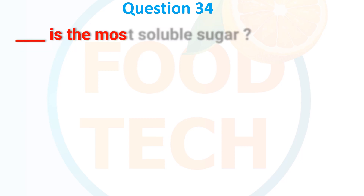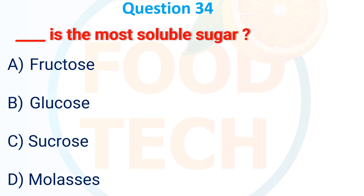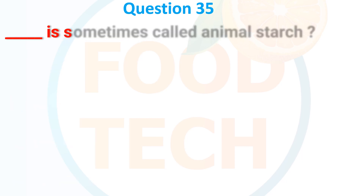Question 34: Which is the most soluble sugar? A. Fructose, B. Glucose, C. Sucrose, D. Molasses. The answer is A. Fructose.